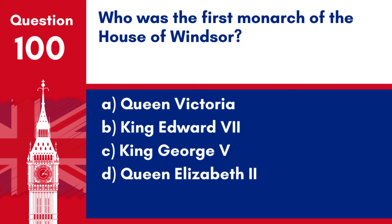Question 100. Who was the first monarch of the House of Windsor? a. Queen Victoria. b. King Edward VII. c. King George V. d. Queen Elizabeth II.